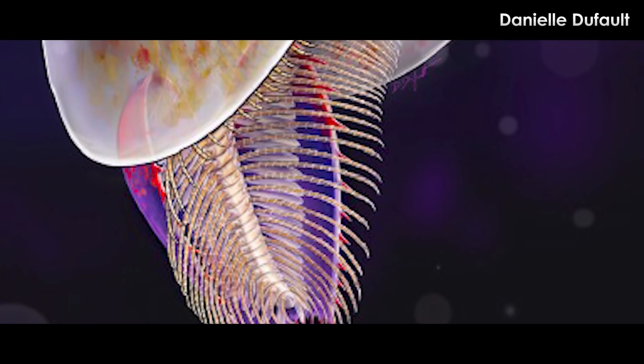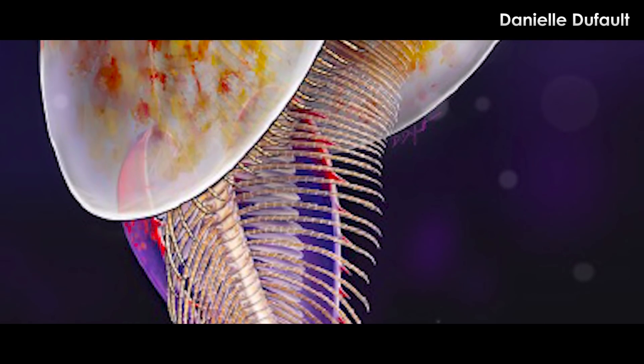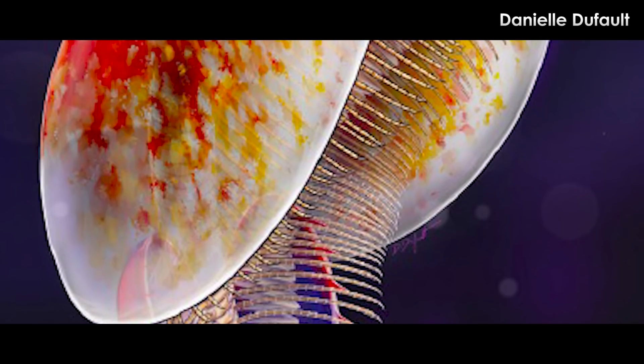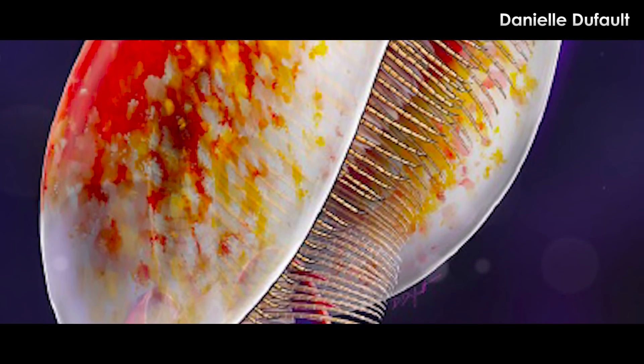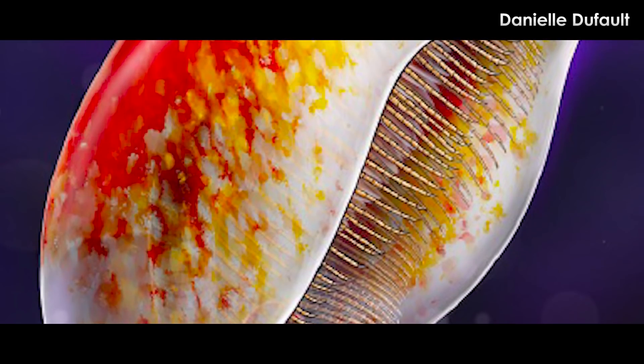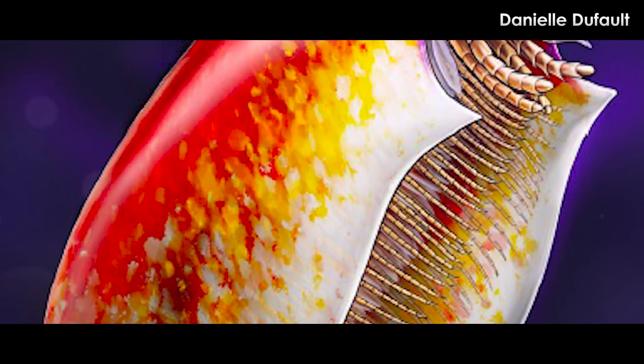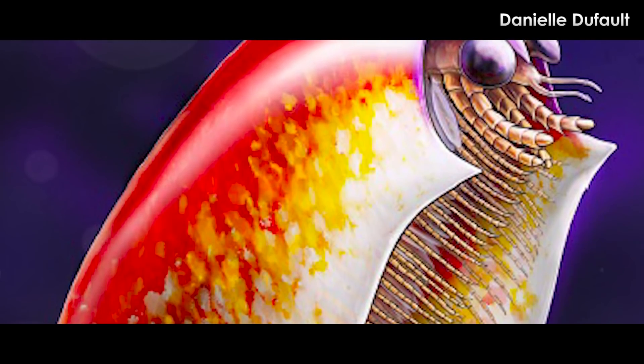So Pacucaris shows us how different these Cambrian bivalved arthropods can be. This makes trying to organize them more difficult to clarify. Pacucaris also presents some features that may be quite important to the understanding of early arthropod evolution. More will likely be forthcoming.